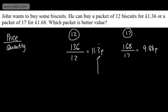So this is what it's telling me it would cost per biscuit. So if I bought this packet per biscuit it would be 11.3 and this one would be 9.88. Therefore what we would have now is the 17. That is the better value because each biscuit is cheaper.